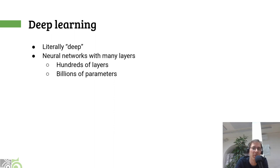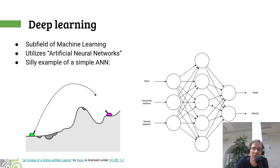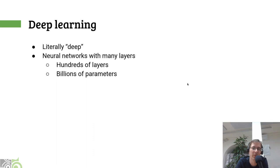Maybe just one note: why are deep learning networks actually called deep? Because they are literally deep. In this example, you can see there is just one middle layer, but contemporary networks have hundreds of these layers — and that's why they are called deep. There's no deeper meaning in the word 'deep' here. Aside from having hundreds of layers, they also have billions of parameters, where each parameter is kind of like one of those connection arrows.